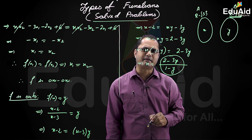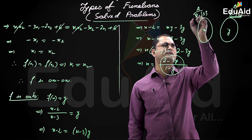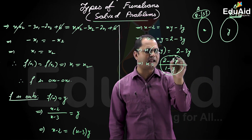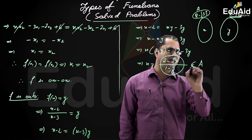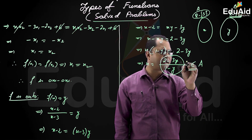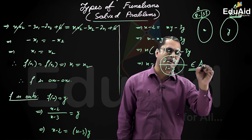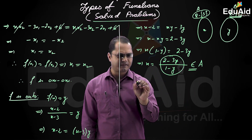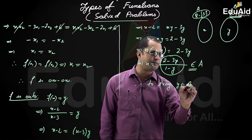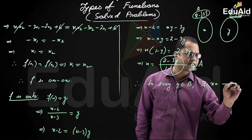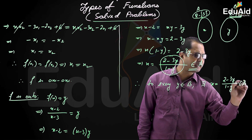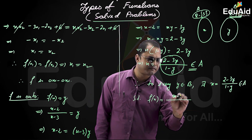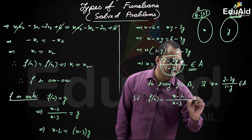So whenever y is a real number in B, this expression (2 minus 3y)/(1 minus y) will also be a real number. We also know that x should belong to A, and elements of A are real numbers except 3. So x is a real number except 3, meaning this expression belongs to set A. Therefore, to every y belonging to B, there exists x equal to (2 minus 3y) divided by (1 minus y) belonging to A, such that f(x) equals, by definition of f(x), (x minus 2) divided by (x minus 3). Now we substitute the value of x.